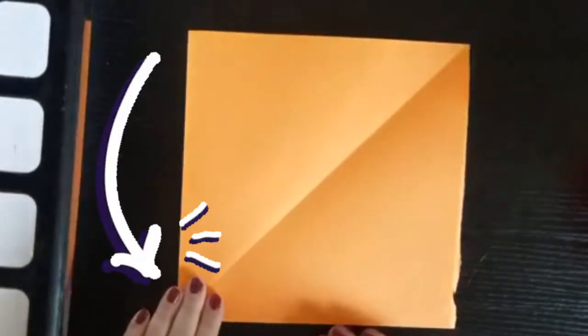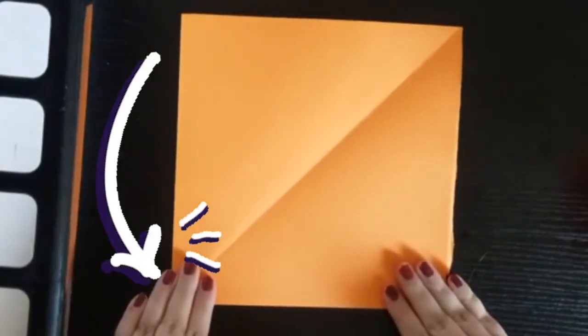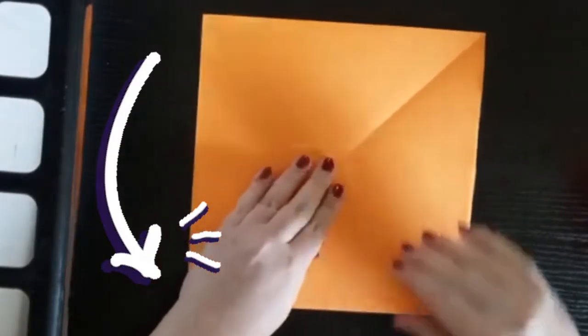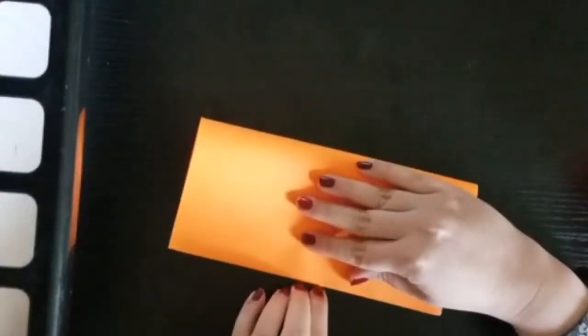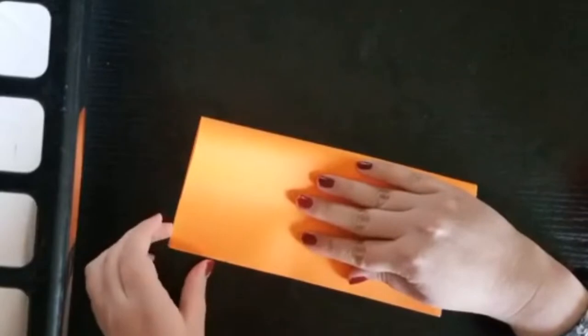Open your triangle to reveal your square sheet of paper. Now we're going to take the top side and fold it down so that it matches the bottom. This will fold the square in half. Remember not to crease until your sides are perfectly matched up.